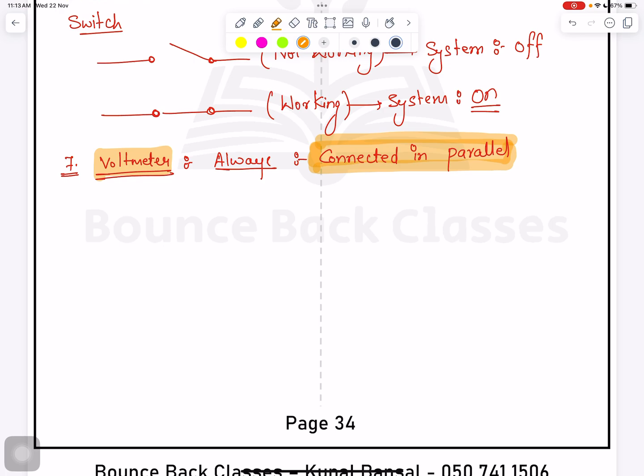Eighth is ammeter. This is for current, it measures current. And voltmeter measures potential difference. Clear.